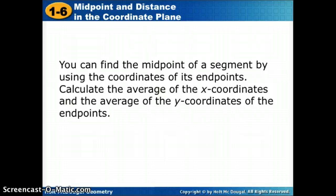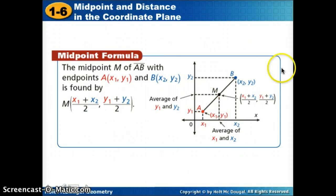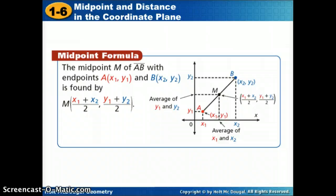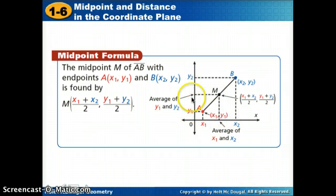The first thing we're going to look at is how to find the midpoint. We already learned that the midpoint is the point in the middle, but now that we put it in a coordinate plane, it's also the point in the middle on the y number line. To find the midpoint, we find the average of the x's and the average of the y's — add the two endpoints' x values (x1 and x2) and divide by 2, add the two endpoints' y values and divide by 2. That gives you the midpoint of a diagonal segment.